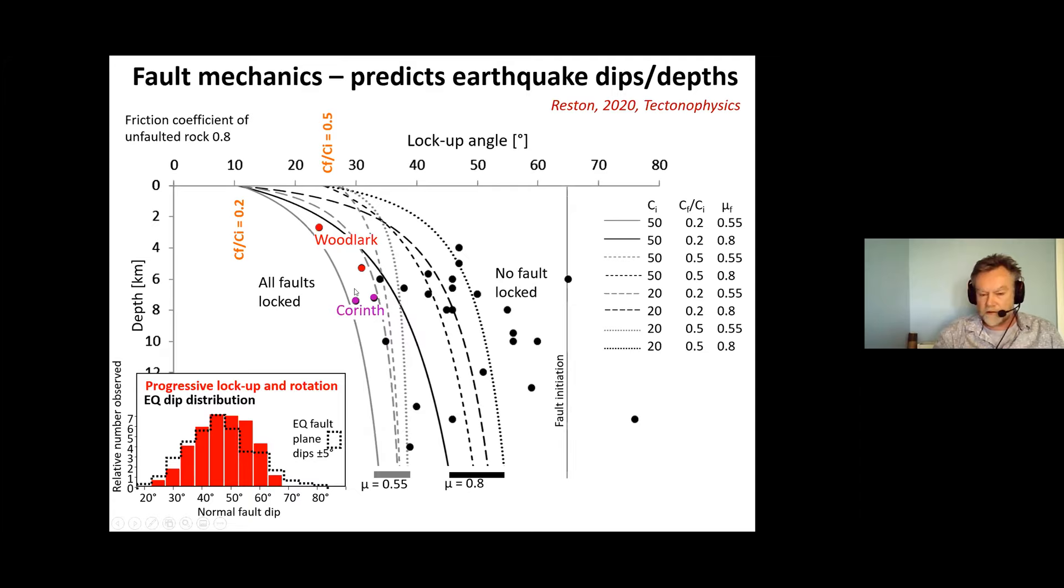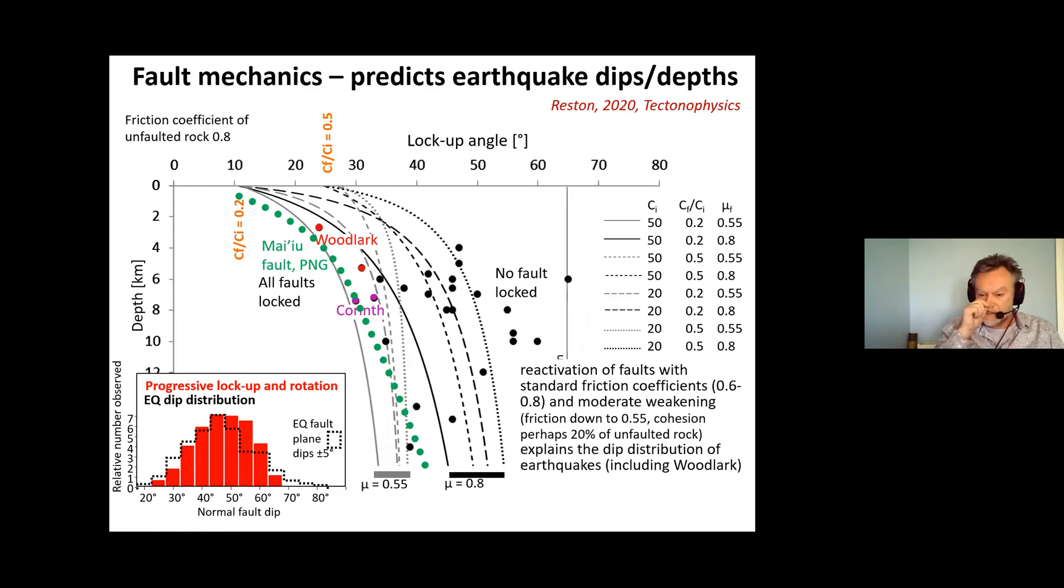And also on there are the Corinth earthquakes. And I've just already had the Malu fault plotted on there as well from Papua New Guinea which sort of follows the low end of these curves but it's still compatible with fairly strong faults. So first sort of result from this is that reactivation of faults with standard friction coefficients and modern weakening explains the dip distribution of earthquakes including Woodlark.